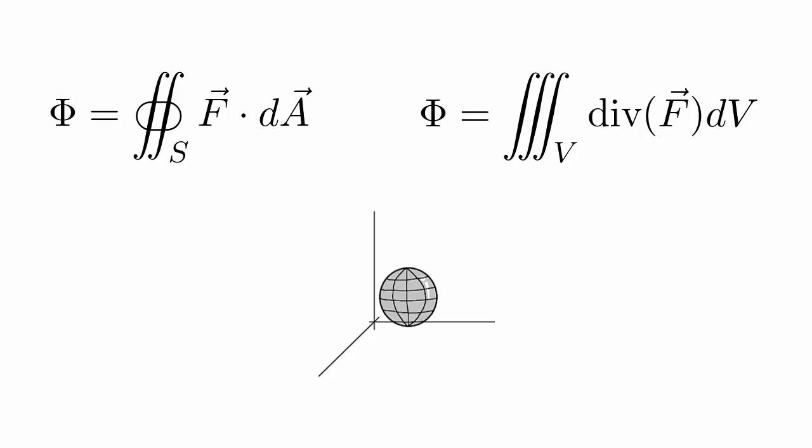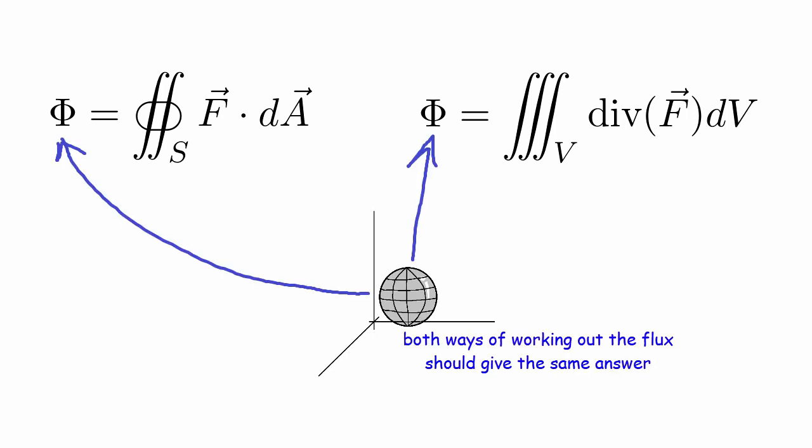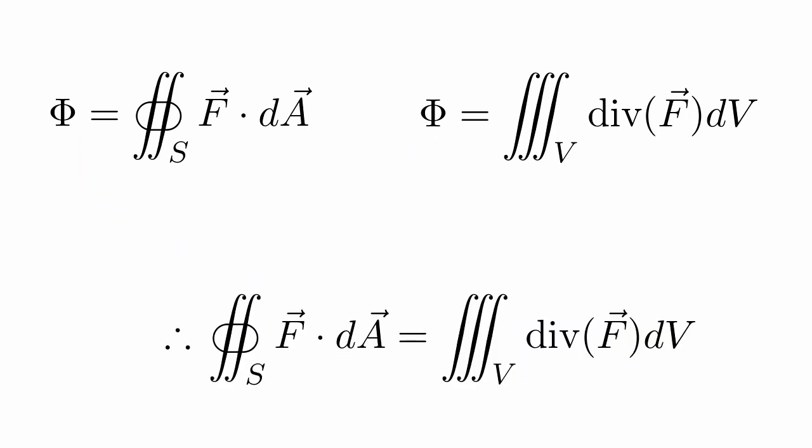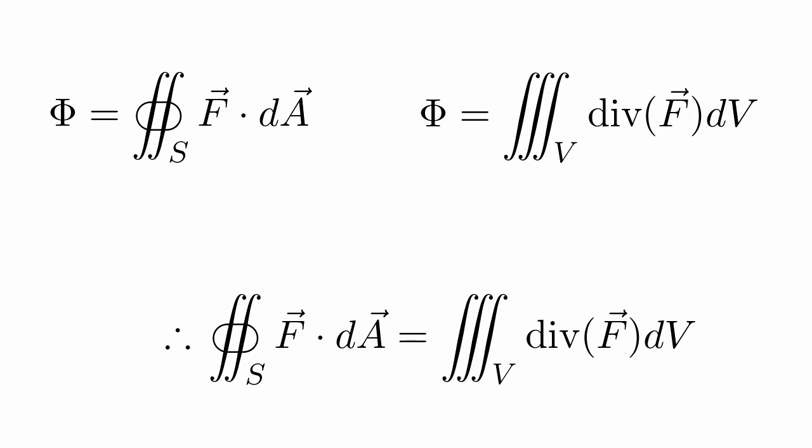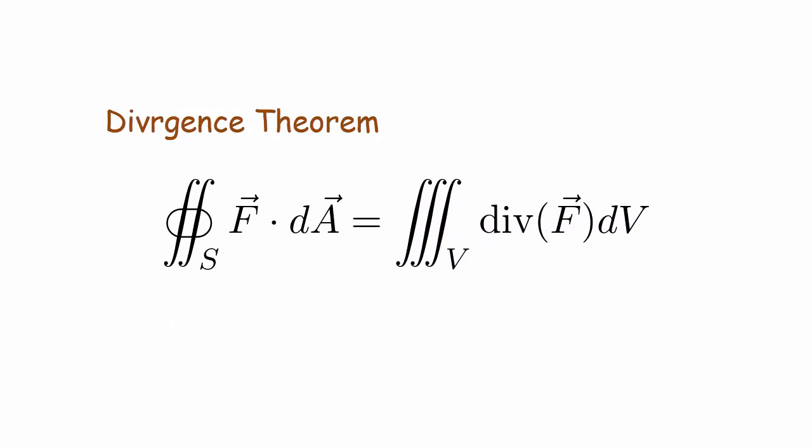So now we have two ways that we can work out the flux over a closed region. And we can say that these two ways must be equal to each other. And right here that we have is what we call the divergence theorem.